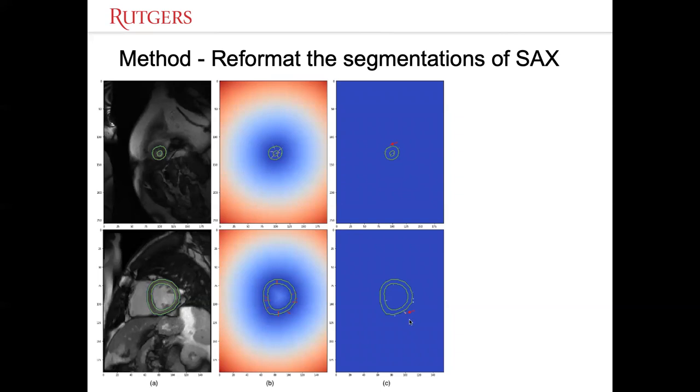If the misalignment between the long axis and short axis is very large, then the outlier will be a very large value.